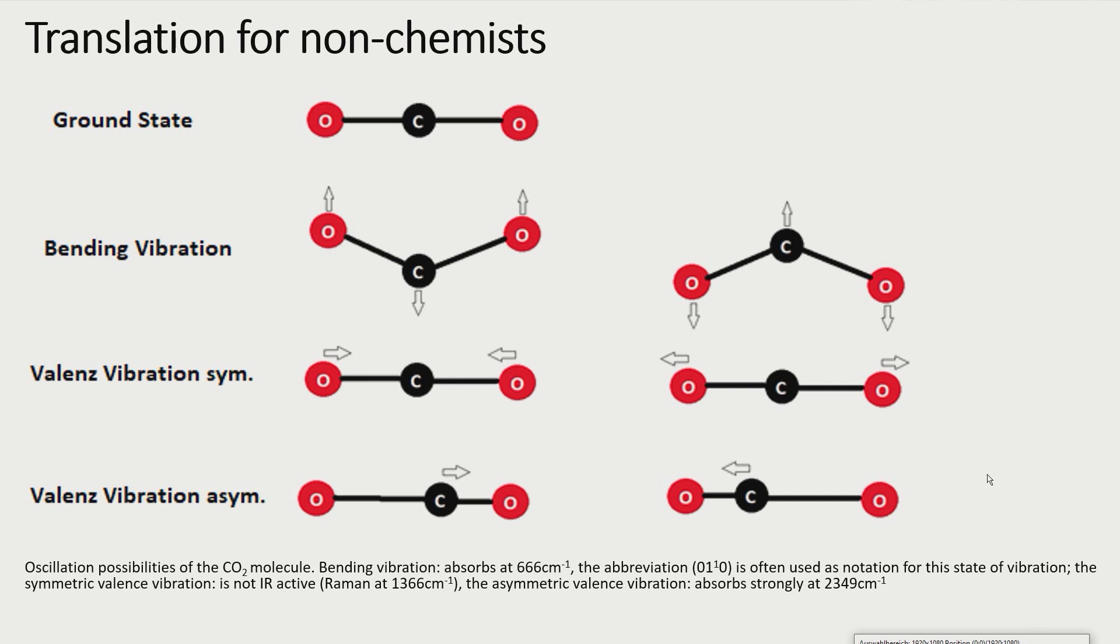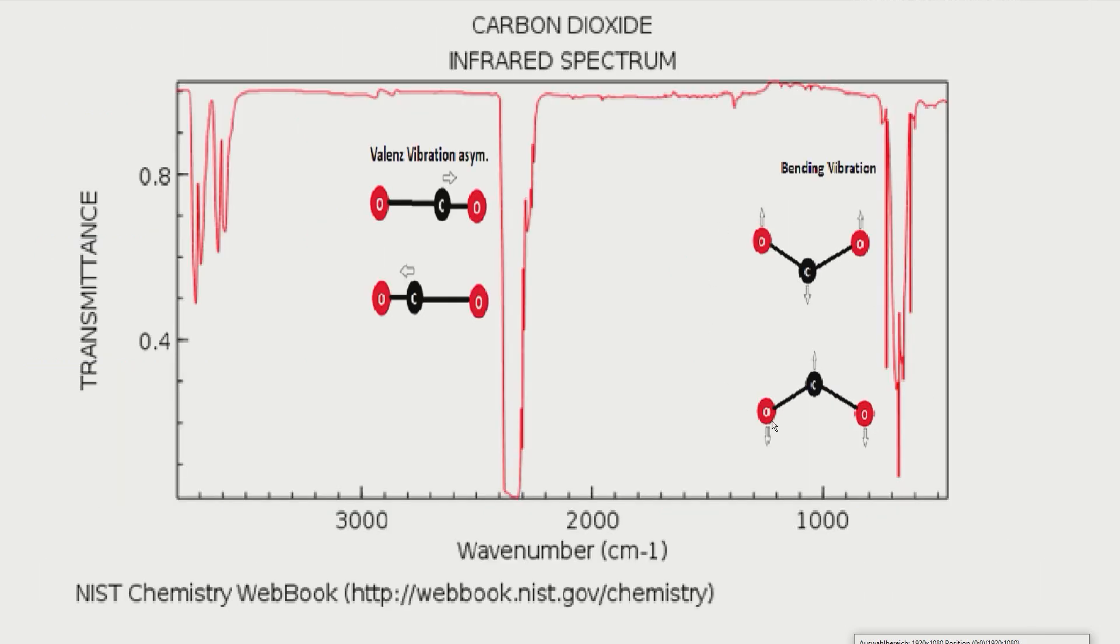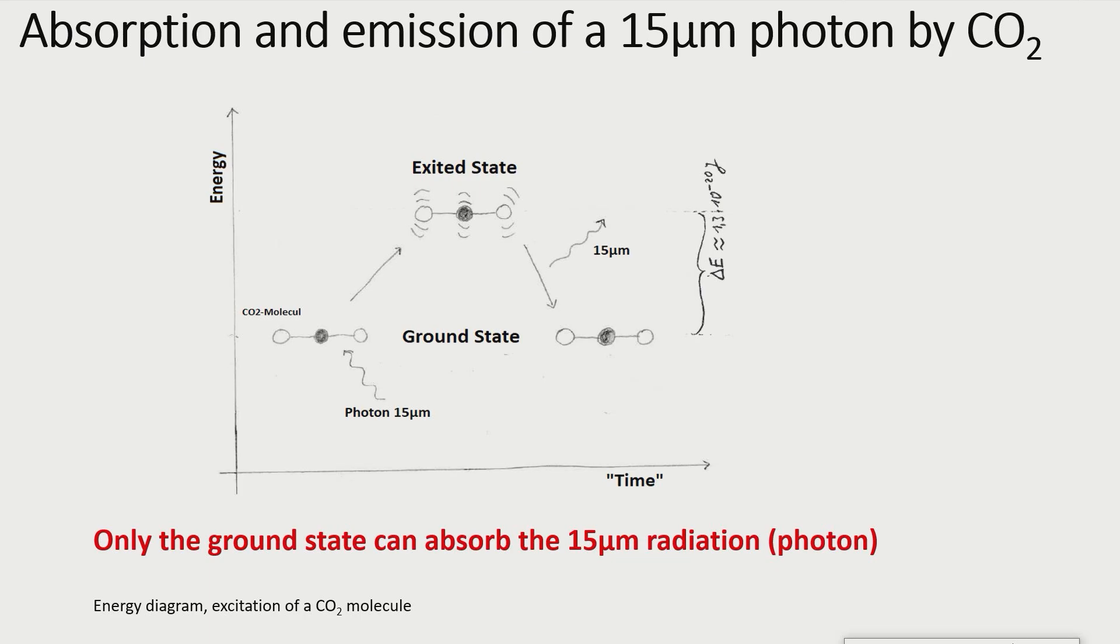For the climate discussion only the bending vibration at wave number 666 is deemed to be relevant. Wave number 666 is equivalent to a wavelength of about 15 micrometer. When a CO2 molecule is hit by a photon with a wavelength of 15 micrometer, it can absorb the energy of this photon.